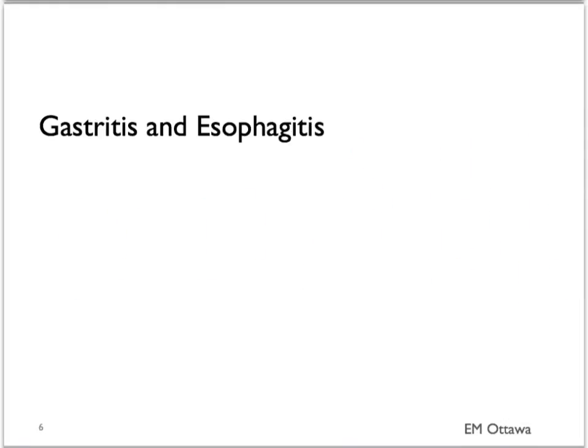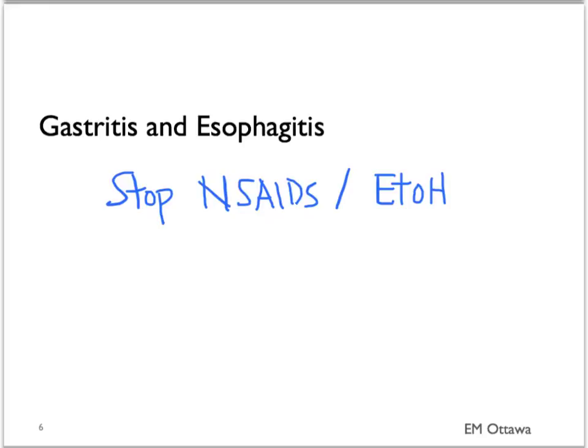For gastritis and esophagitis, patients often have quite a small amount of bleeding, and there is no urgent specific treatment. Many of these patients have esophagitis and gastritis based on use of NSAIDs and alcohol, so we will talk to patients to stop these. Sometimes anti-acid therapy is started when the patient goes home.